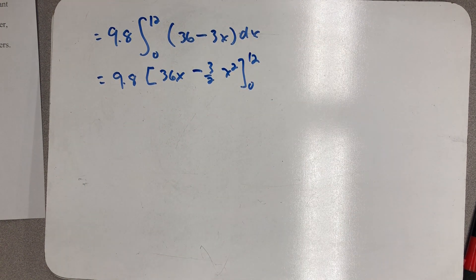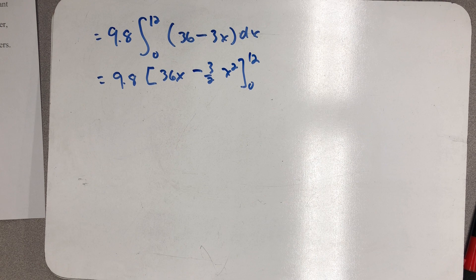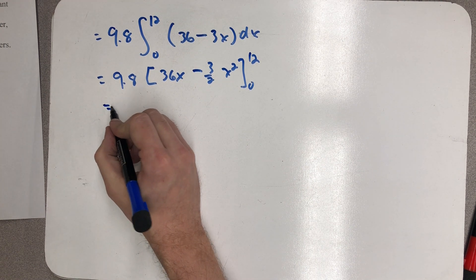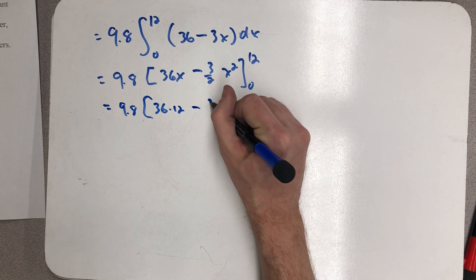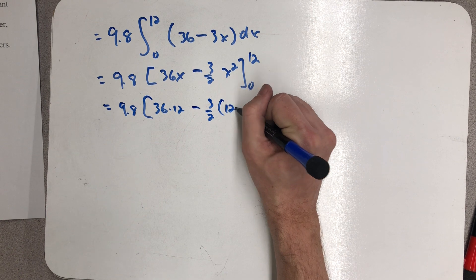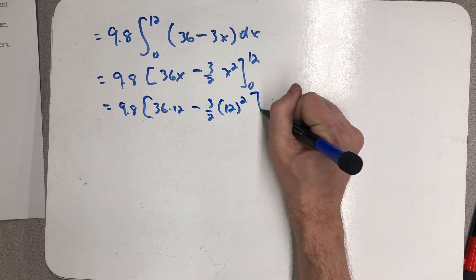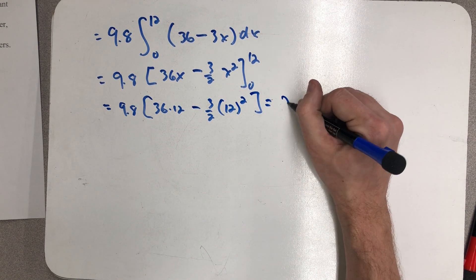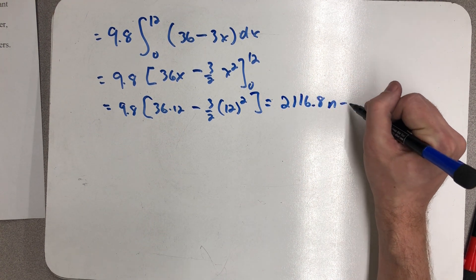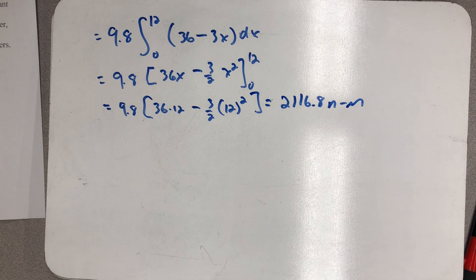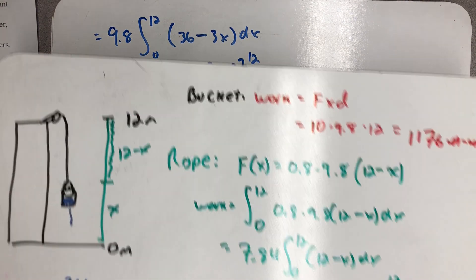Now I just need to evaluate that from 0 to 12. And when you do, you find out that you've done 2106.8 newton meters of work just to lift the water.